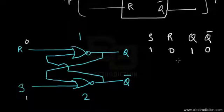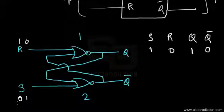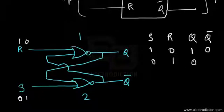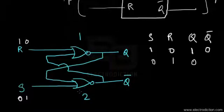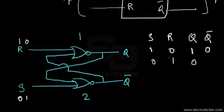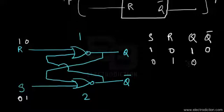If we set R to logic one and S to logic zero, the output at Q switches from logic one to logic zero. You can verify this by applying these inputs through the NOR gates — I'll leave that as homework. By putting a logic one at R and logic zero at S, we get logic zero at Q and logic one at Q-bar.